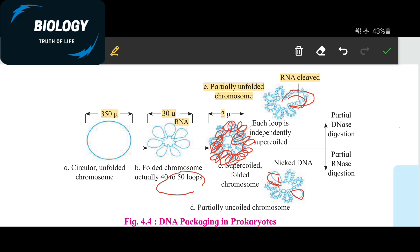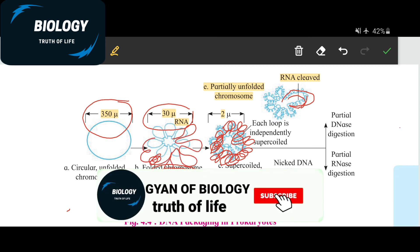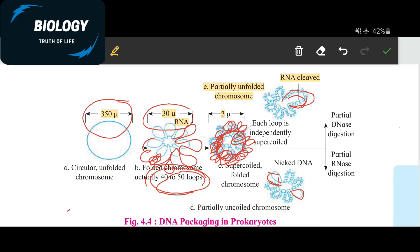Each independently super coiled loop is called a domain. To summarize: the DNA is first made circular in shape, reducing to about 350 microns. After that, loop folding reduces it to 30 microns. Then each domain or loop gets super coiled, reducing the size to 2 microns, and this 2-micron DNA fits into the nucleus.